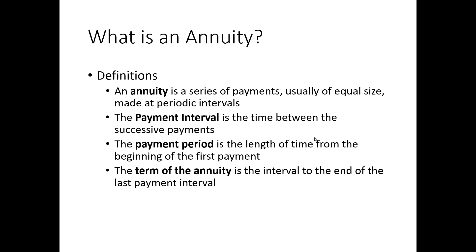The second big thing is that payments are made at periodic intervals — meaning every week, every month, every two weeks, every quarter, every six months, or every year you make or receive a payment. Periodic intervals just means regular intervals. This is a little different from equivalent payments, where those payments could happen whenever, with no requirement for them to follow a certain regularity. That distinguishes annuities in a major way.